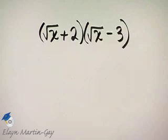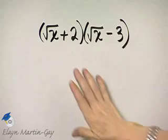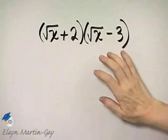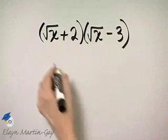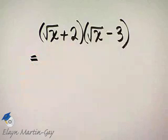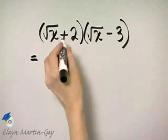Let's perform the indicated operation. It is multiplication. And you can think of this as a binomial times a binomial. So if you'd like to use the FOIL order for multiplication, go right ahead.